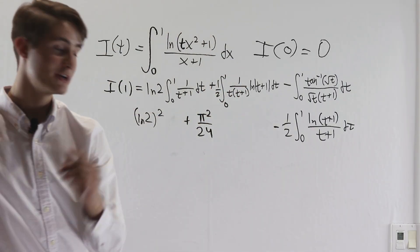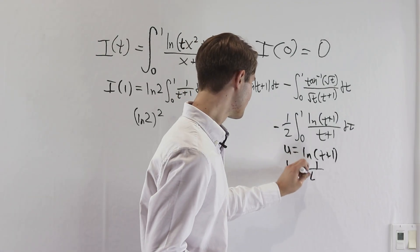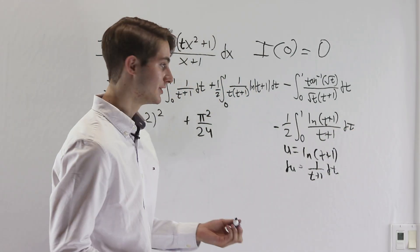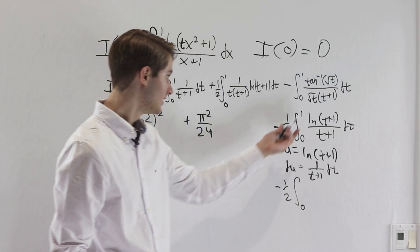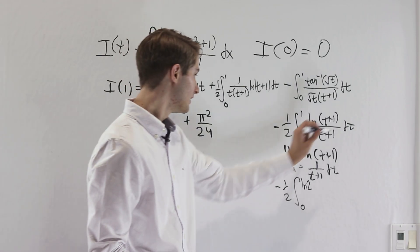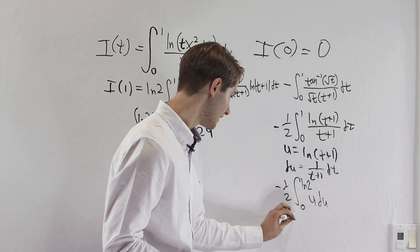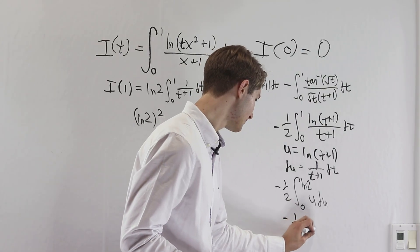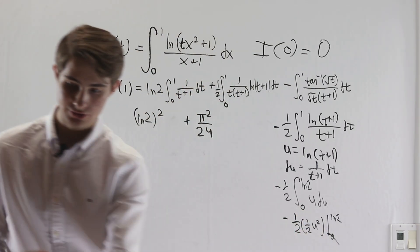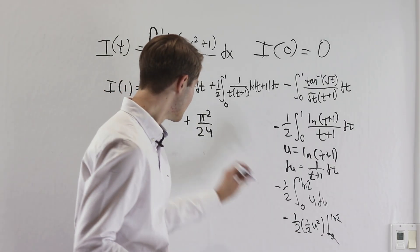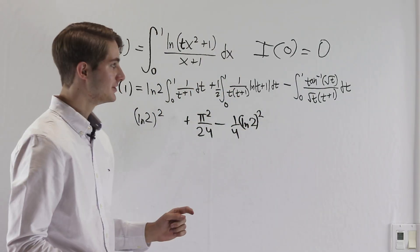The second sub-integral is much easier because we have natural log of t plus 1 on top and can substitute u equals natural log of t plus 1. Then du equals 1 over t plus 1 dt, which sits right there for us. We get minus one half times the integral of u du evaluated from 0 to natural log 2, which gives minus one half times one half u squared at natural log 2 and 0. Since 0 squared is 0, we get minus one fourth times natural log 2 squared.